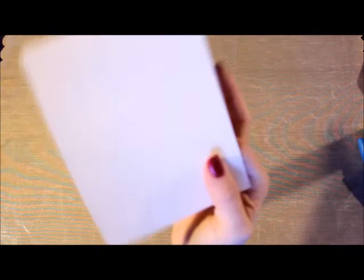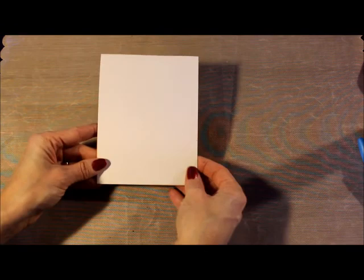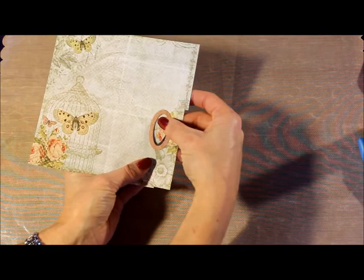To begin with, I created my card base, an A2 size out of cardstock, and next I went ahead and got a coordinating pattern paper that had images on it and searched for an image that I thought would look nice inside my oval.